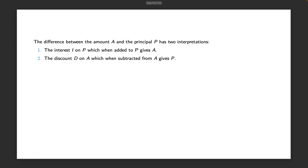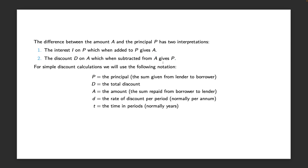Namely we're going to see it as the discount D on the amount A, which when subtracted from A gives P. For these simple discount calculations we're going to use the following notation, very much similar to the simple interest calculations.